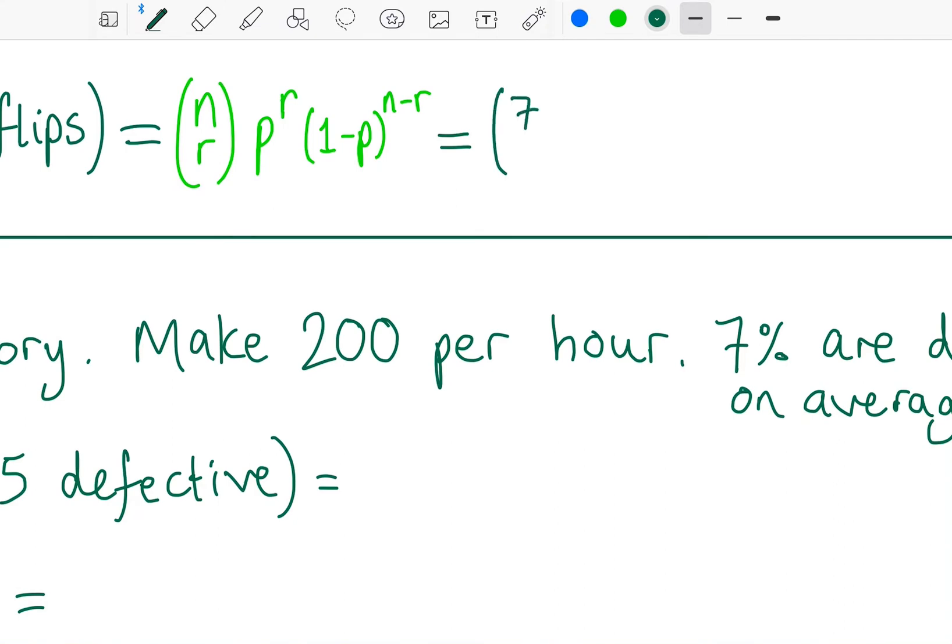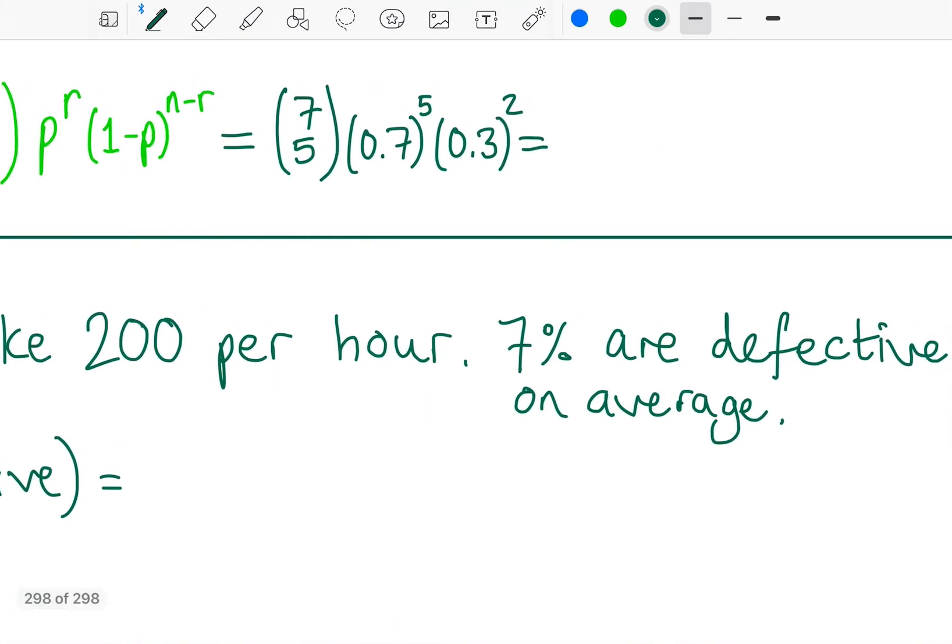So in this case, it's just seven choose five. The probability of a tail is 0.7, and I want five of those. The probability of a head, well, one minus 0.7, 0.3, and I want two of those. And maybe this time I can calculate it. So, seven choose five is 21, 0.7 to the power of five, then times 0.09, 0.3 squared. That is going to equal 0.318.